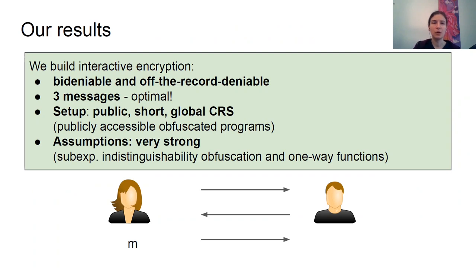Nevertheless, in this work we show a positive result. We show it's possible to get deniable encryption satisfying both standard deniability and our new notion of off-the-record deniability, thus essentially emulating secure channels in the presence of a coercive adversary. This protocol requires only three rounds, which is optimal given the impossibility result, and requires the pretty strong assumption of sub-exponentially secure obfuscation. Our scheme also requires a setup in the form of a CRS consisting of a bunch of obfuscated programs, which can be reused many times.